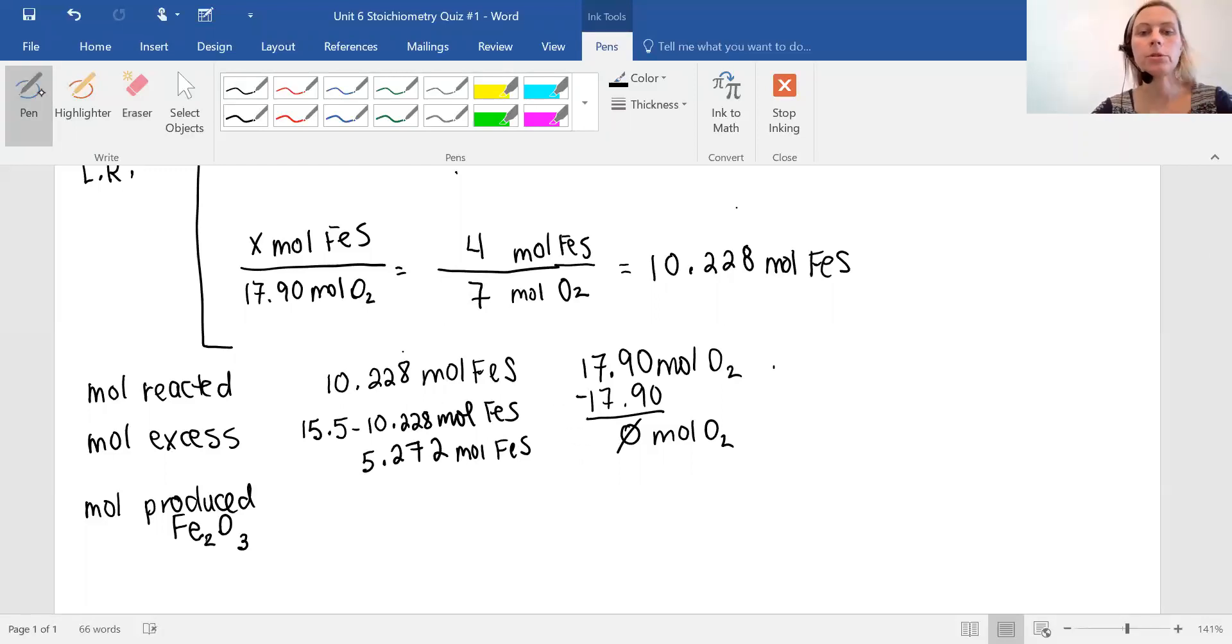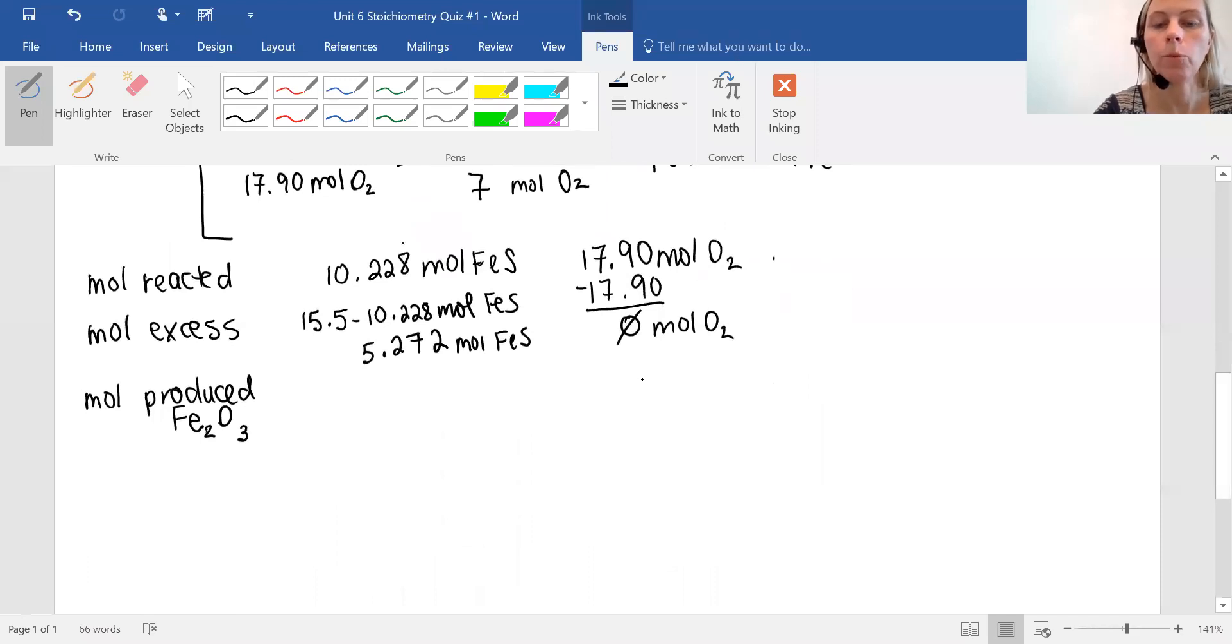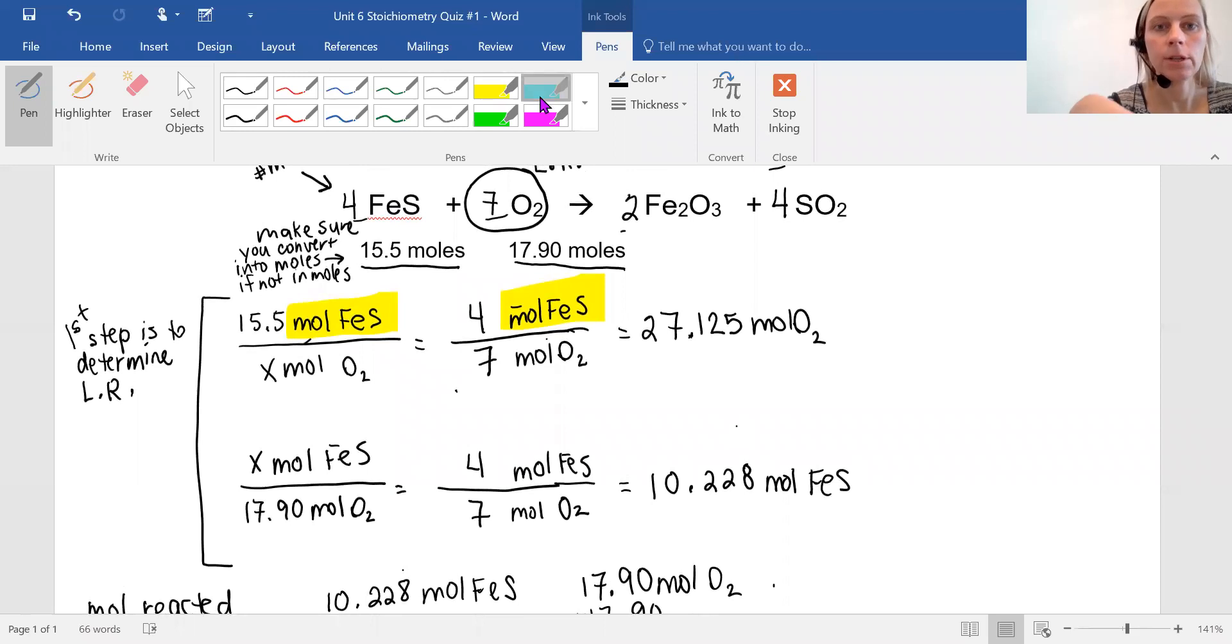And then we need the moles produced. So we're making our moles produced. We're going to use the information from our balanced equation and our one that limits the reaction. So we can set up the proportion of what we know so far and what we're trying to find. We know there's 17.90 moles of oxygen. We're trying to find the moles of iron 3 oxide, which is rust. Then to do our stoichiometry, so it's what we know to what we're trying to find. The second part of the stoichiometry proportion is always coming from the balanced equation. So we'll look up here and then I'll use a highlighter. Our balanced equation says seven oxygen to two iron 3 oxide.